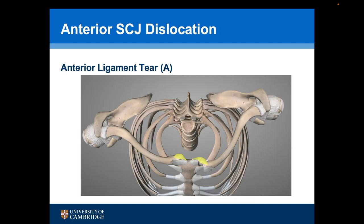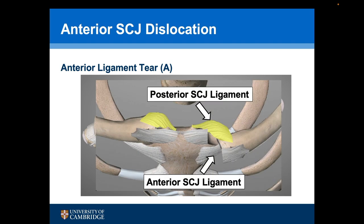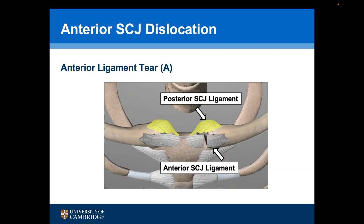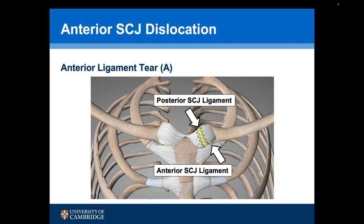Occasionally a similar configuration occurs, but the ends of the anterior ligament — particularly if this is an acute situation — are still present. So when the joint is reduced, both the posterior ligament is intact and the anterior ligament, although torn, has the ends of the torn ligament still present.